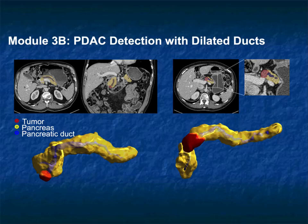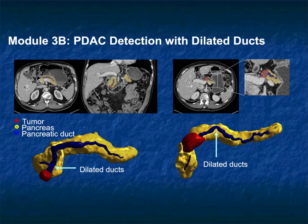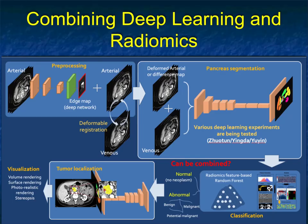We then looked at other things including duct dilation. Remember, the number one miss for people missing a pancreatic mass is seeing a dilated pancreatic duct but no mass, and not following up on it. We taught the computer to recognize the duct, duct cutoff, and then recognize precisely what the tumor is. You can see two examples here of dilated pancreatic ducts with tumors proximal to the duct transition.